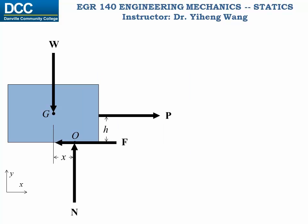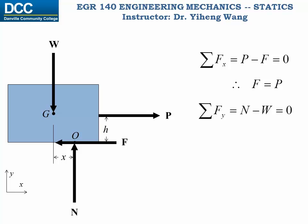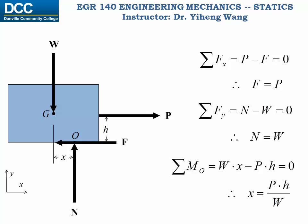We place the free body diagram in an xy coordinate system and write three equilibrium equations for 2D rigid body analysis. First, resultant force along the x-direction: P minus F equals 0, therefore F equals P. Second, resultant force along the y-direction: N minus W equals 0, therefore N equals W. Lastly, the moment equilibrium equation about point O: M_O equals W times x minus P times H equals 0, from which we determine x equals P times H over W.